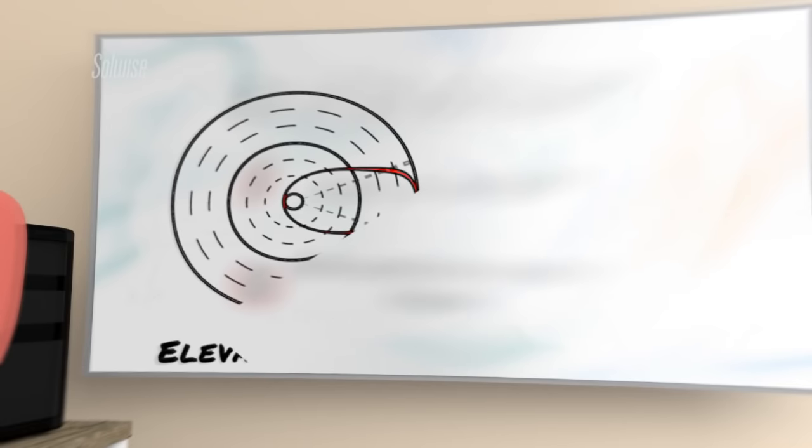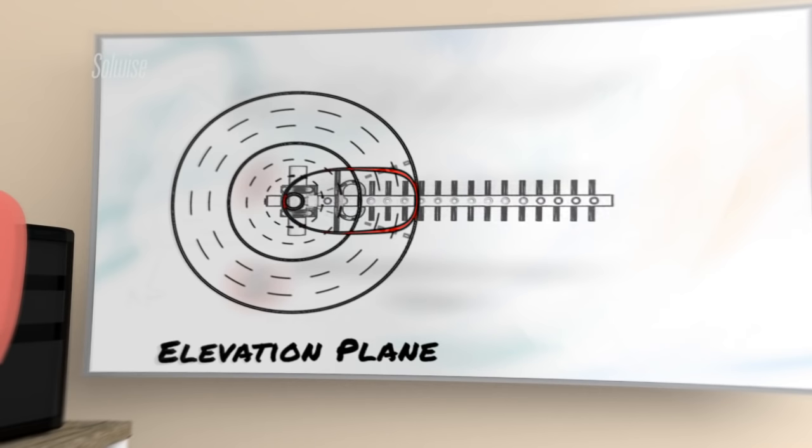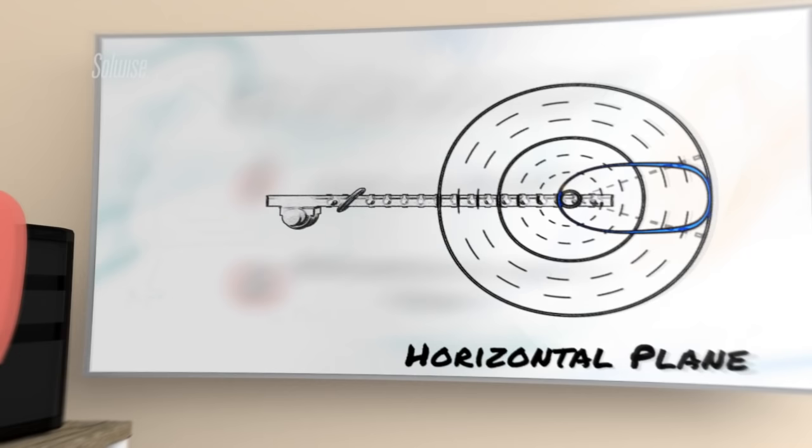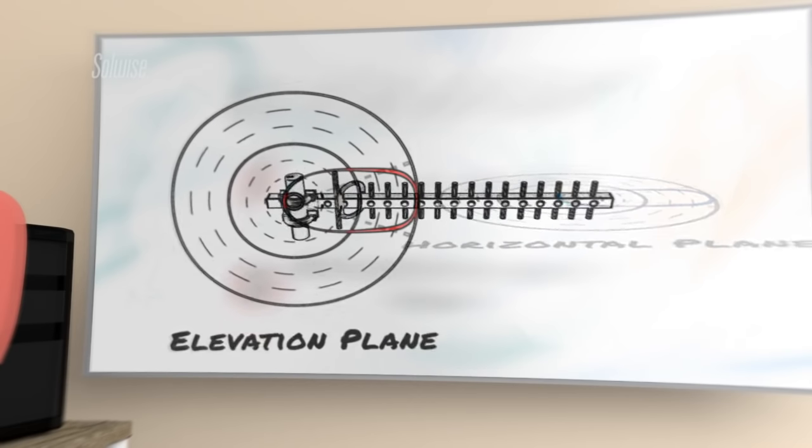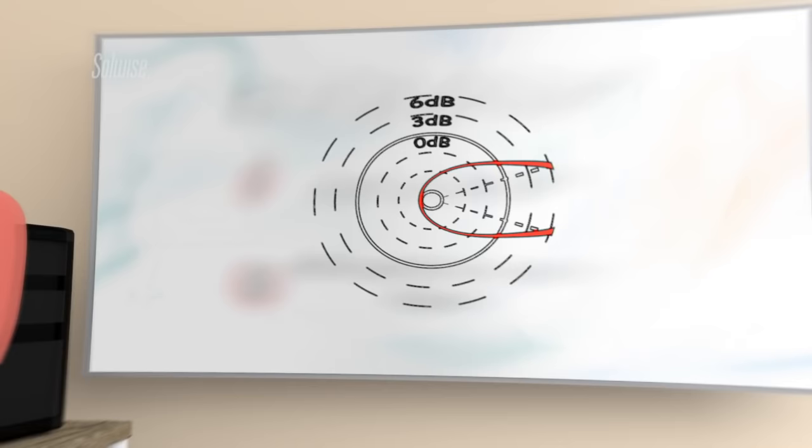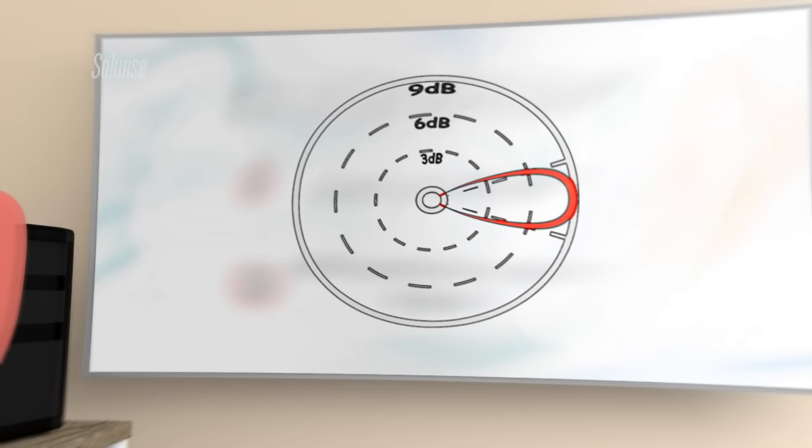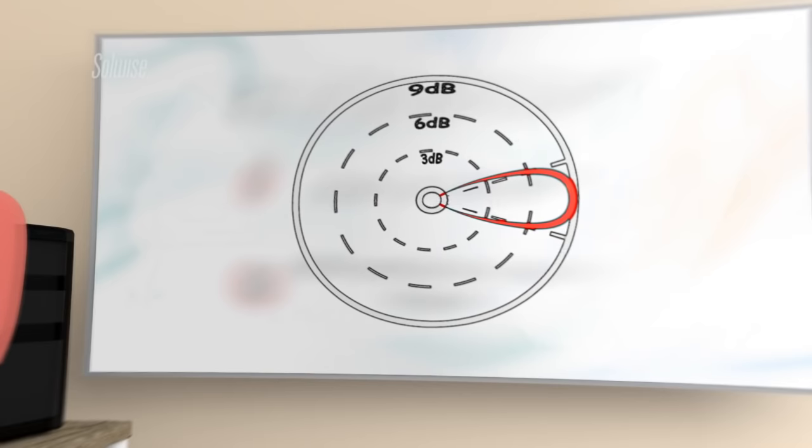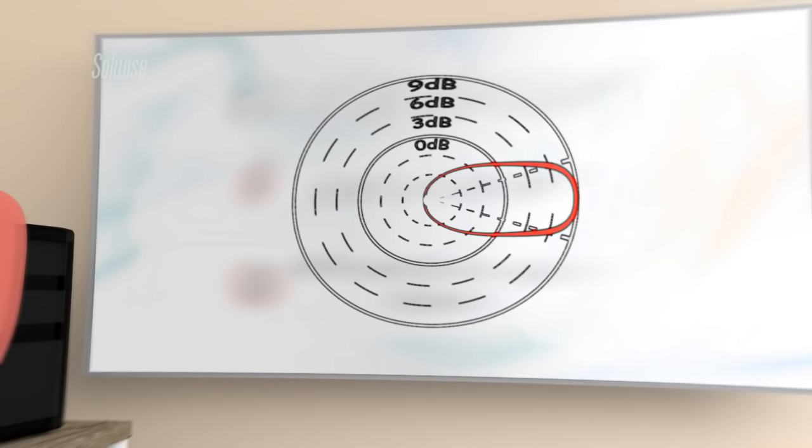An important point to note about polar diagrams is that, although they are the definitive reference for the directional properties of an antenna, you do need to look at them very closely to understand what they mean. It is often difficult to see the scale on the radial axis, i.e. the separation of the circles, and yet they are effectively meaningless without this information.